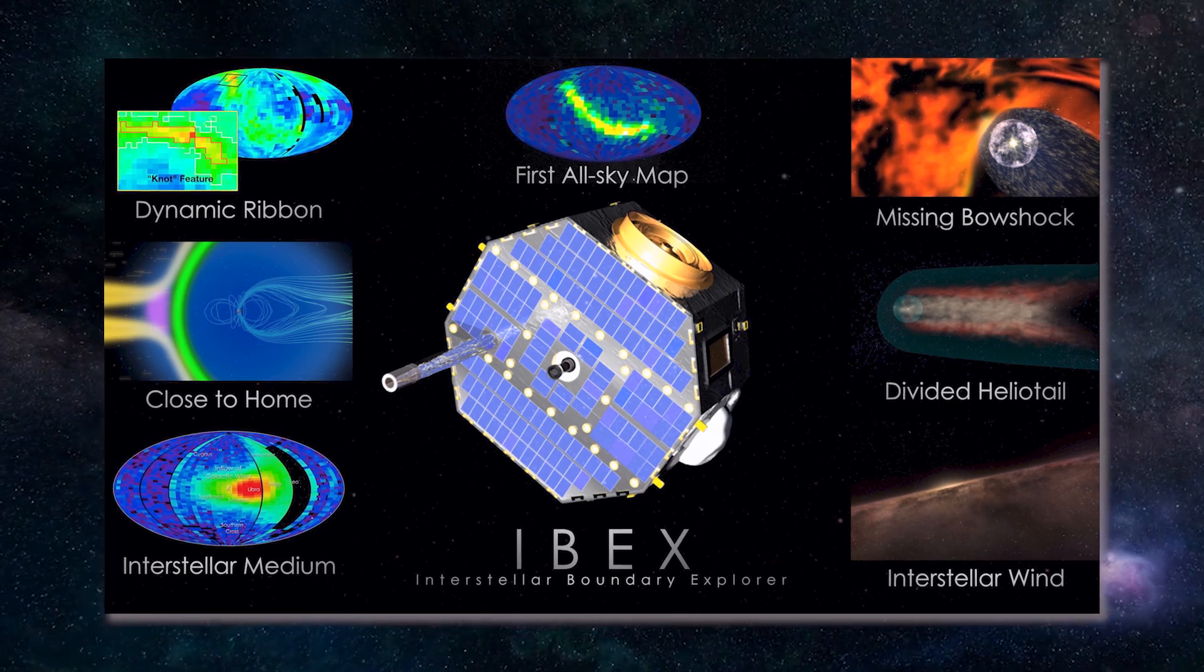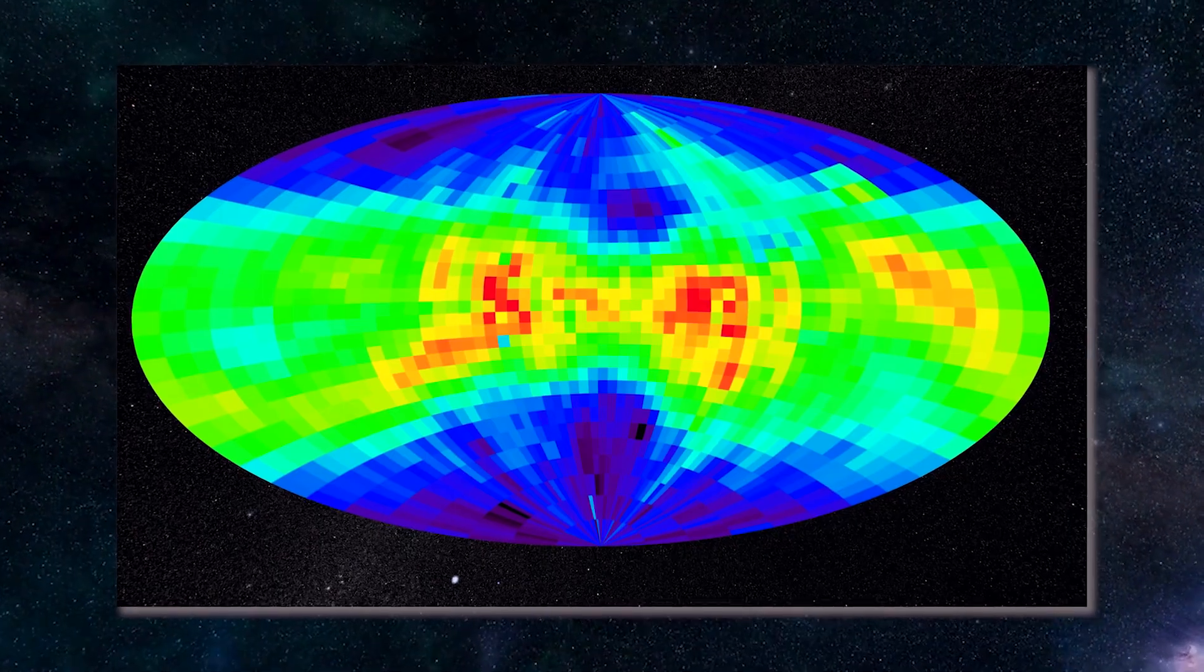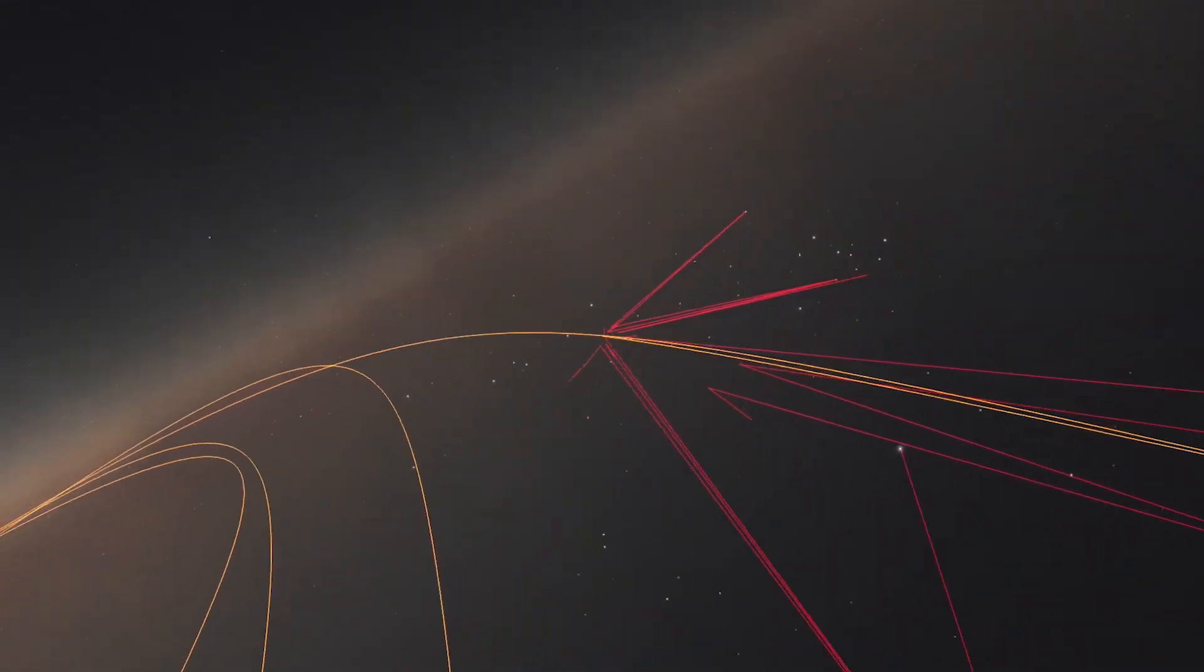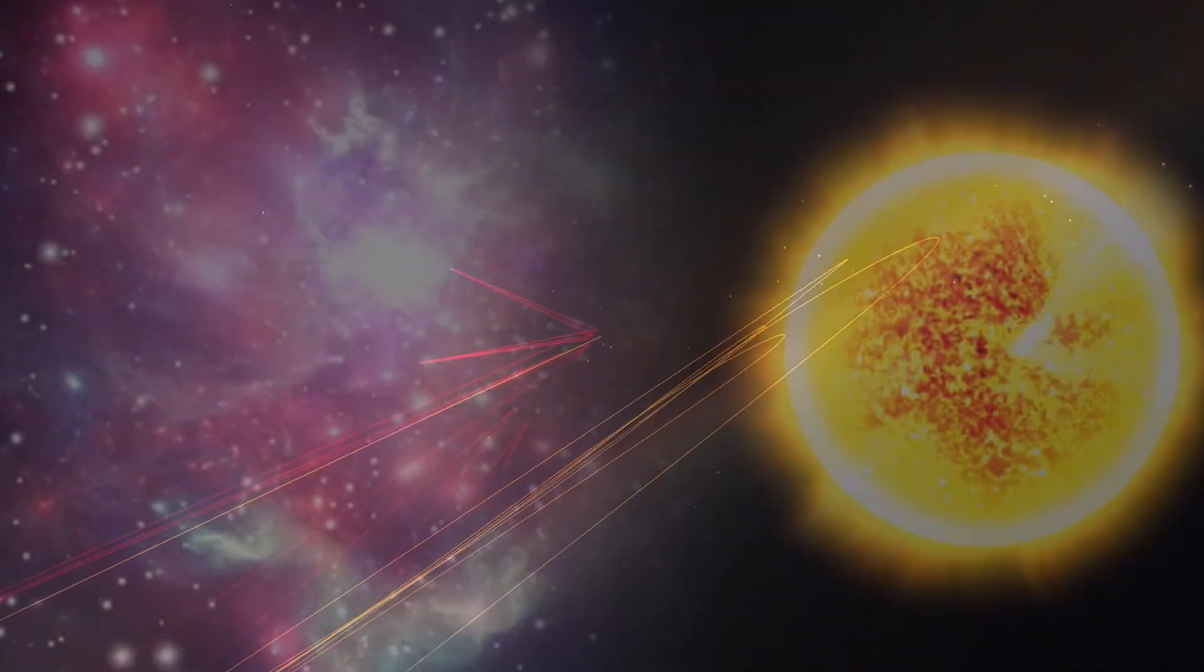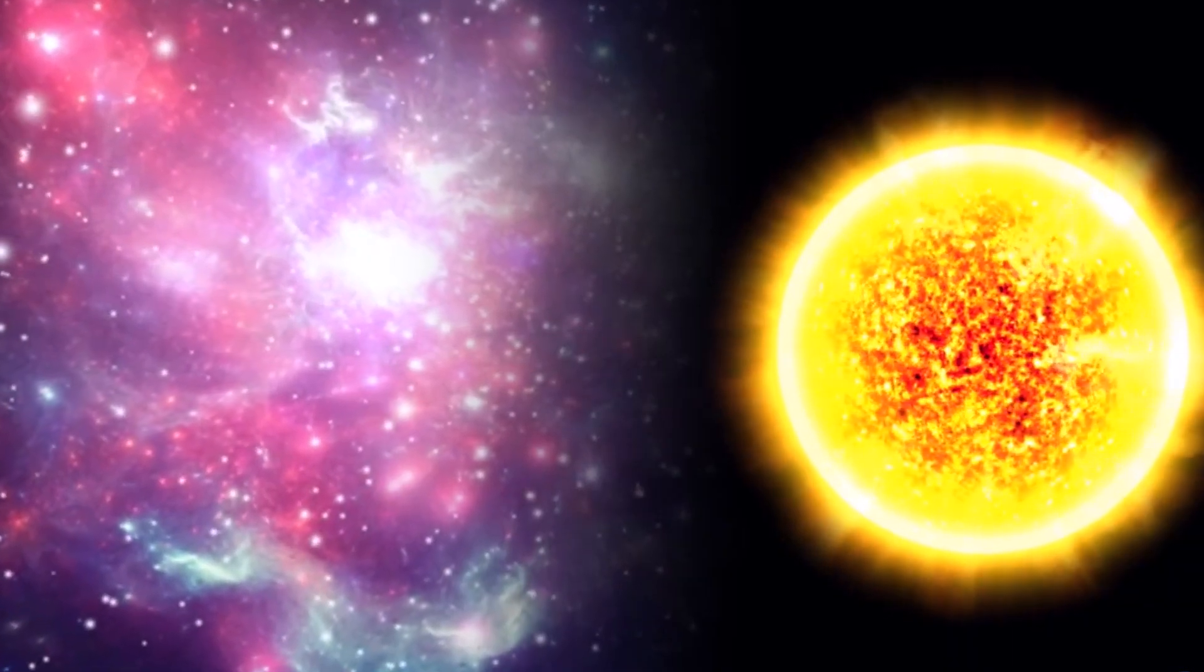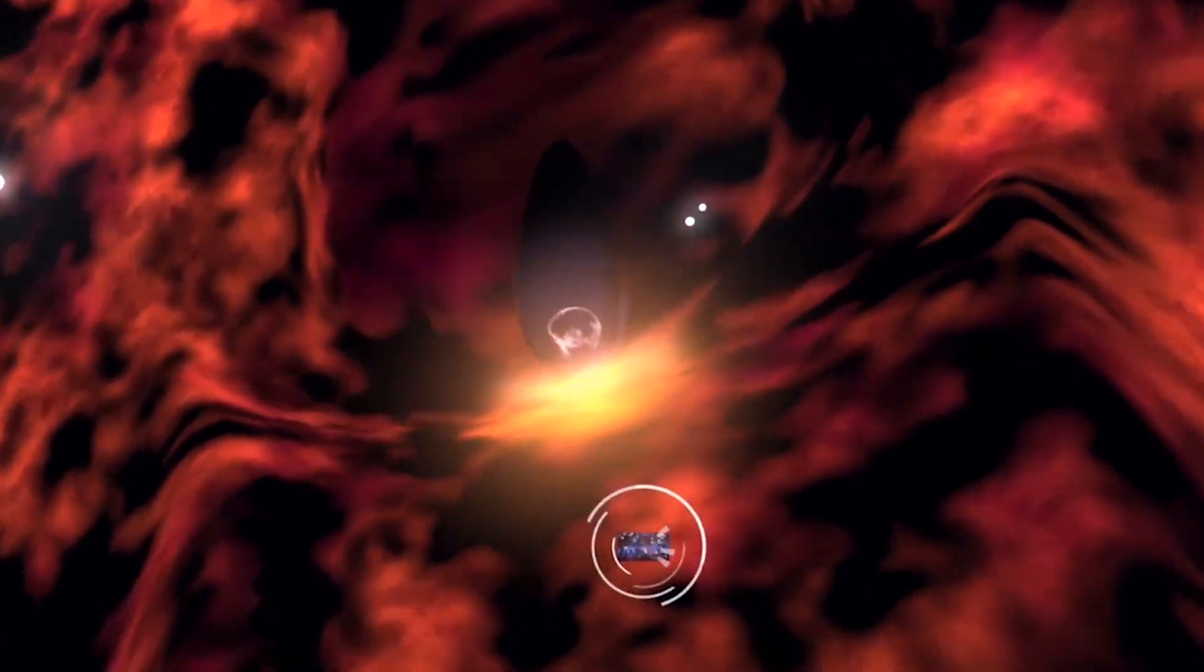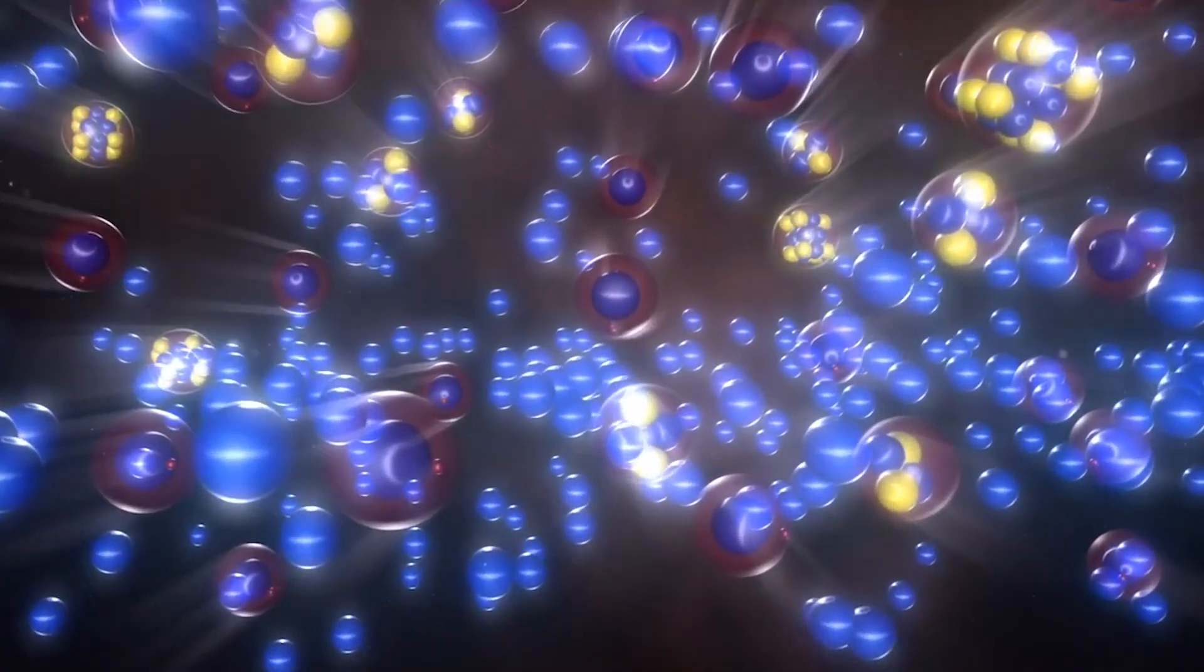NASA's IBEX and the newer IMAP mission map this structure in energetic neutral atoms, painting a sky full of ribbon-like arcs. Evidence that the sun's bubble is not symmetrical, but dented, dented again, and forever reshaped by the external flow.